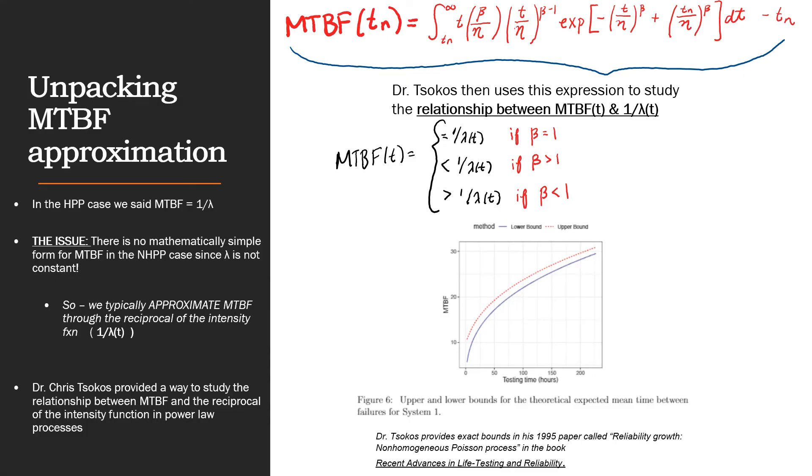Now, understanding Crow's power law model, we should know that there are several other NHPP based models out there. We won't spend time walking through those, but it should be understood that under the umbrella of power law process models, we're utilizing the NHPP and each model utilizes an intensity function.